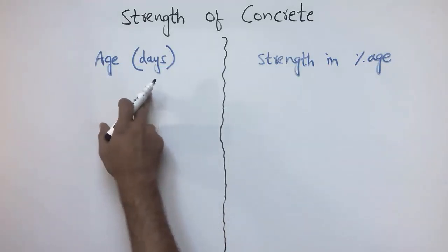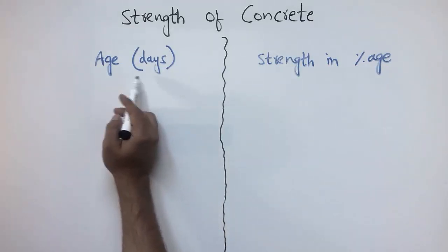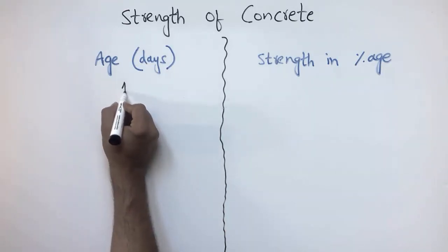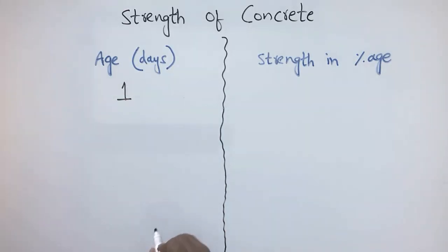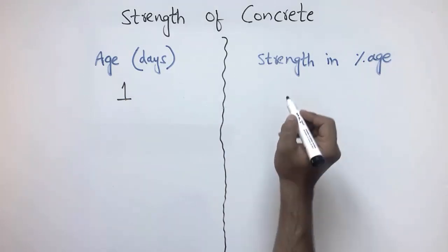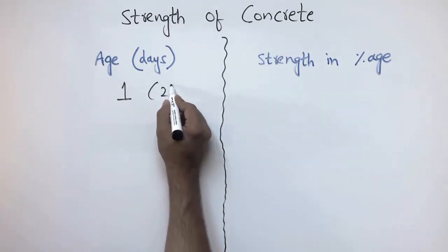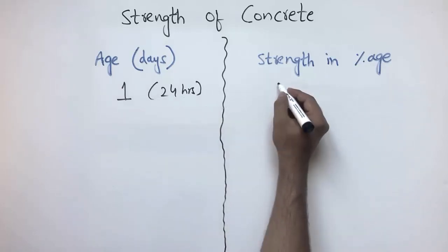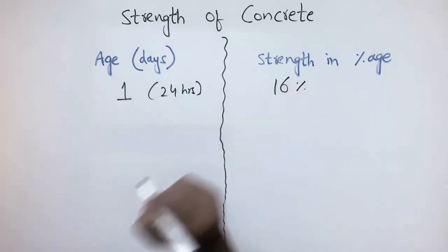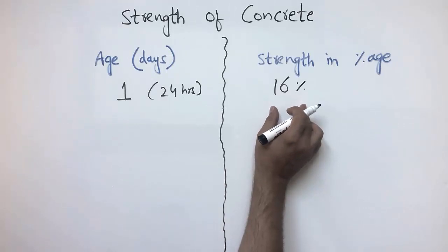Starting with the first day of the concrete - when we pour the concrete, after 24 hours (one day), the concrete gains only 16 percent of its strength.